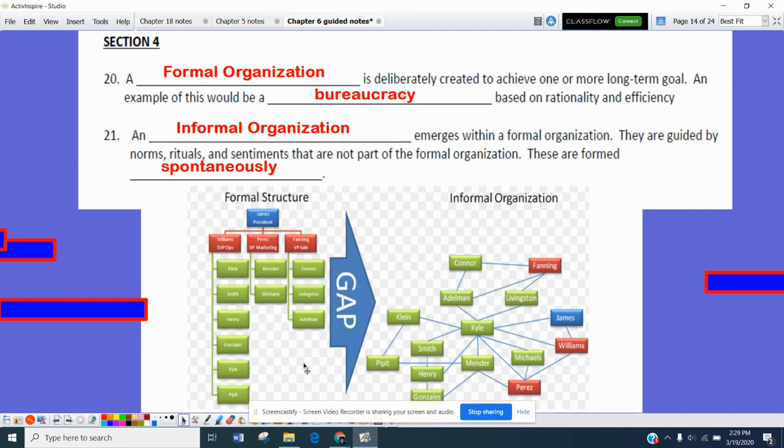if we're looking at a formal structure, that could be like a corporation where there might be a CEO or president and you have different departments where they have vice presidents that are leading different groups of people. Whereas, an informal organization might be a network of friends that has formed out of this formal organization at some point in time.